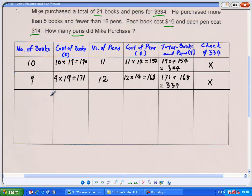Since it's too much, we have to reduce the more expensive items, which is the books. So 8 books, how many pens would that be? 21 minus 8, he would have bought 13 pens. Let's calculate the cost. 8 times 19, that would give us $152. The pens, 13 times 14, that would give us $182.